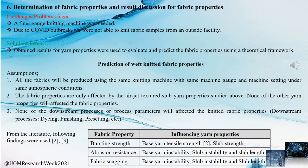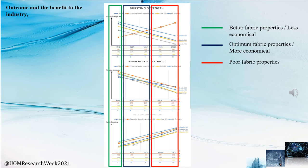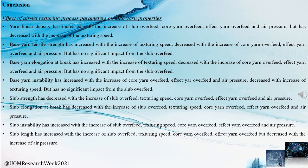For determination of fabric properties, we predicted the knitted fabric properties using the already obtained yarn properties. Bursting strength, abrasion resistance, and fabric snagging were predicted based on base yarn tensile strength, slab strength, base yarn instability, slab instability, and slab length, according to our literature review. We plotted the changing patterns of bursting strength, abrasion resistance, and fabric snagging according to our chosen parameters. As an outcome and benefit to the industry, we identified several areas with better fabric properties or more ergonomical process settings. In conclusion, we have identified the effect of air jet texturing process parameters on slab yarn properties and knitted fabric properties.